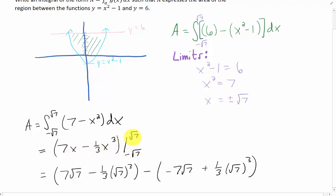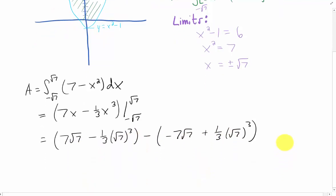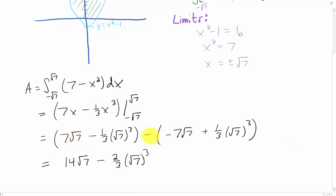Evaluating the antiderivative at the upper and lower limits and subtracting gives us this result. We can combine like terms: 7√7 + 7√7 = 14√7. Likewise, -(1/3)(√7)³ - (1/3)(√7)³ = -(2/3)(√7)³.